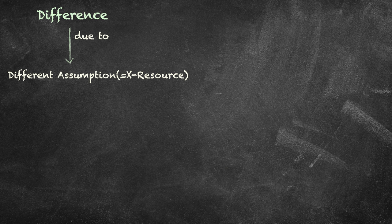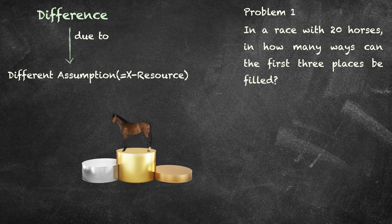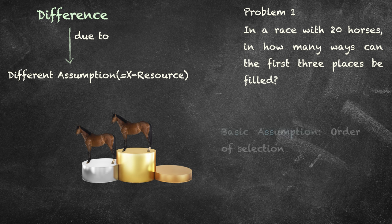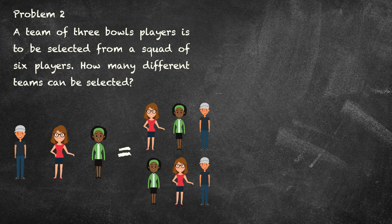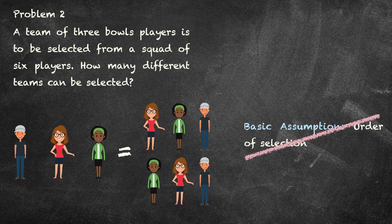It turns out they are different because the assumptions are different. More specifically, in the first problem, whenever we select a horse for the first position, we can tap into the set of 20 horses, and whenever we select a second horse for the second position, this choice will be dependent on the first choice, so that we will be able to tap into 19, not 20, horses. In other words, this problem is dominated by the assumption of order. In the second problem, this assumption does not apply, because a team made up of players A, B, and C is equivalent to B, C, A or any other combination of players. Therefore, in this case, the assumption of order is dropped. Since order does not matter, we have to remove the redundant teams.